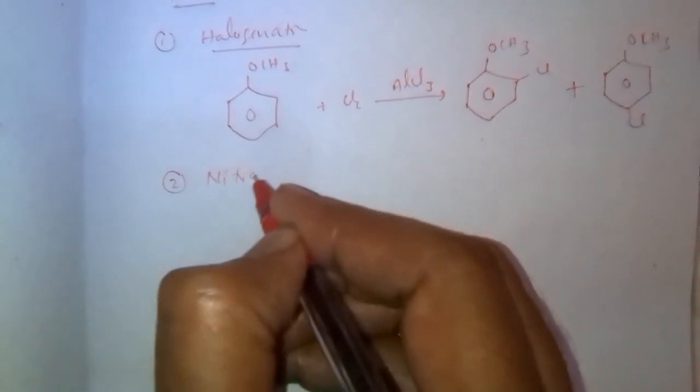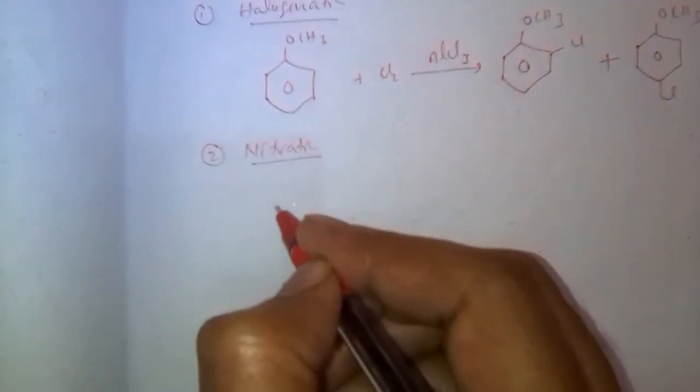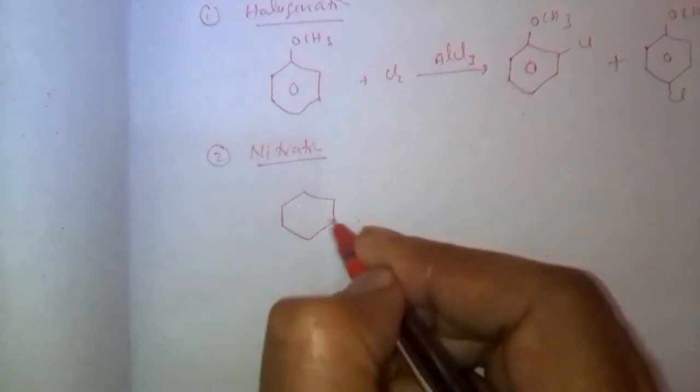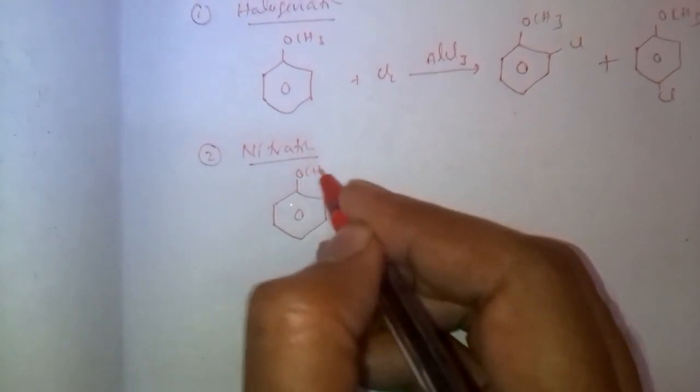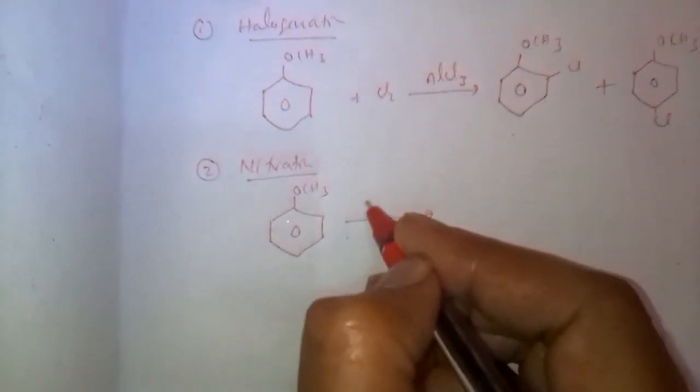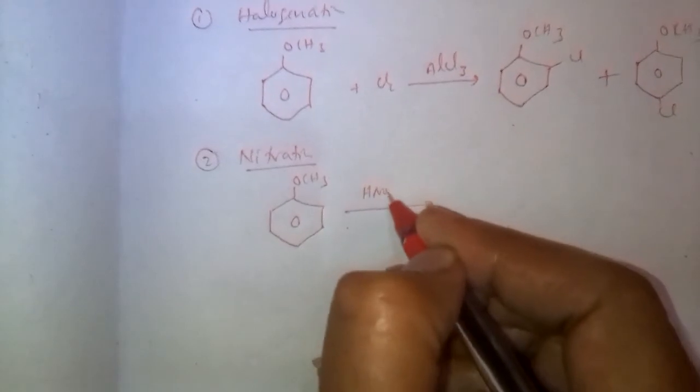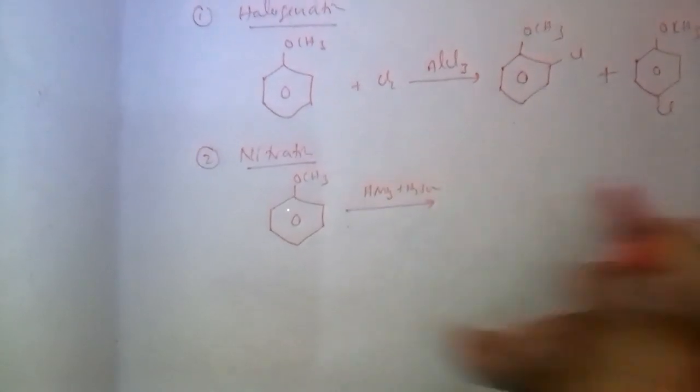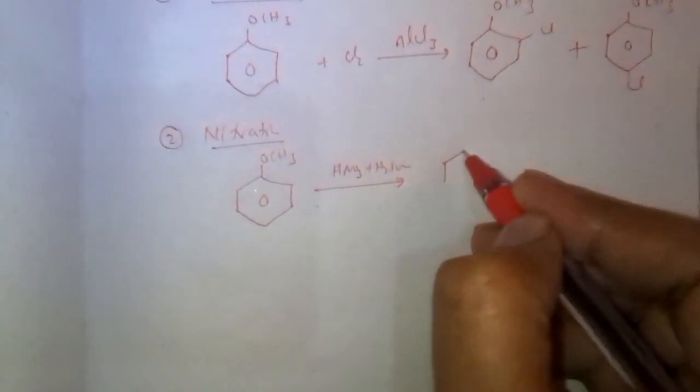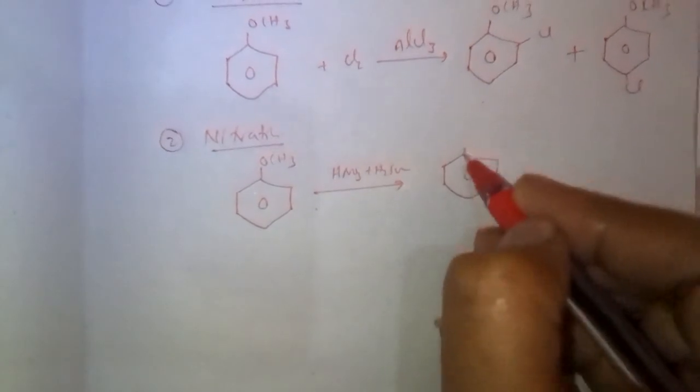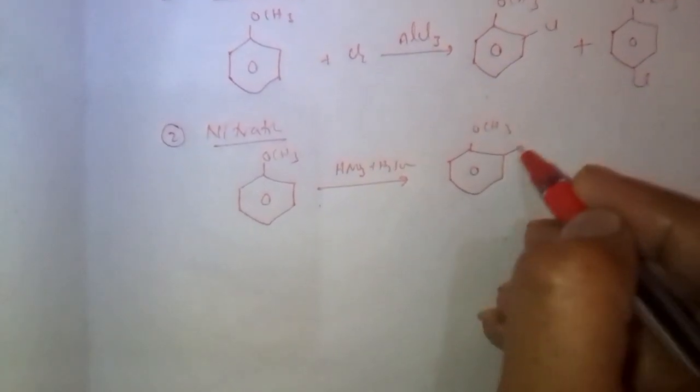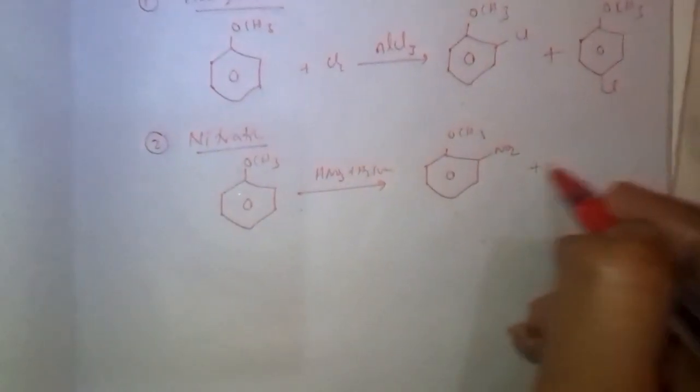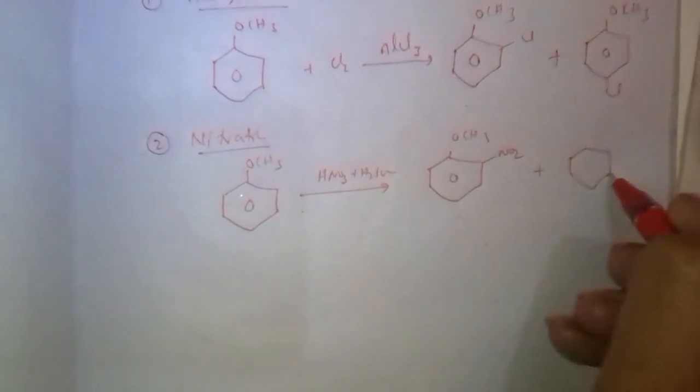Next, nitration. To this we add nitration mixture HNO3 plus H2SO4. NO2 group attaches at ortho or para position. Ortho-nitroanisole, para-nitroanisole. These are formed.